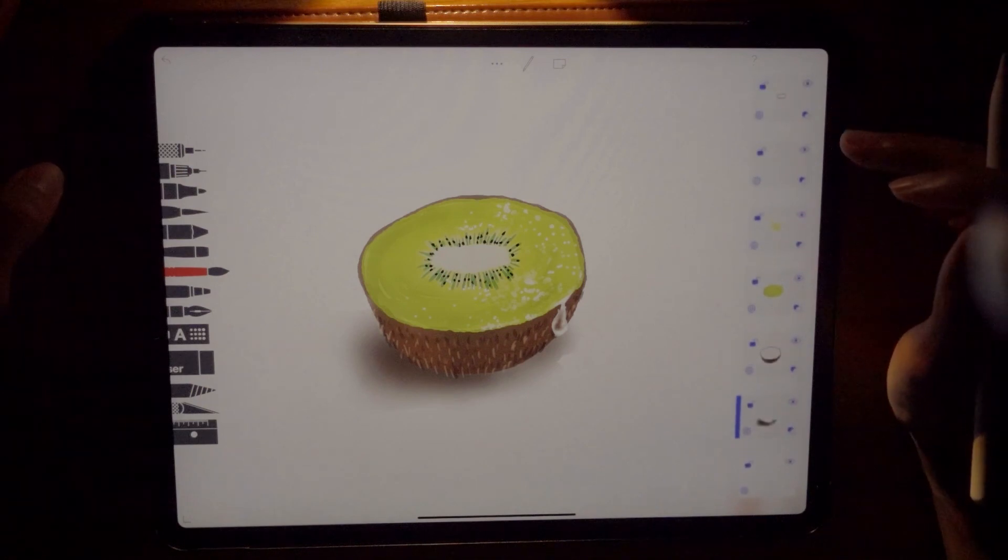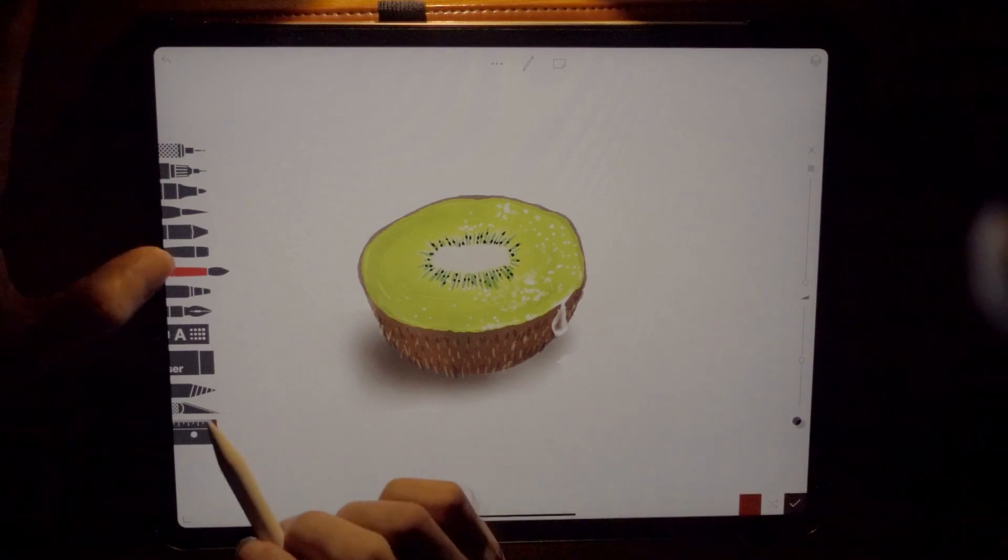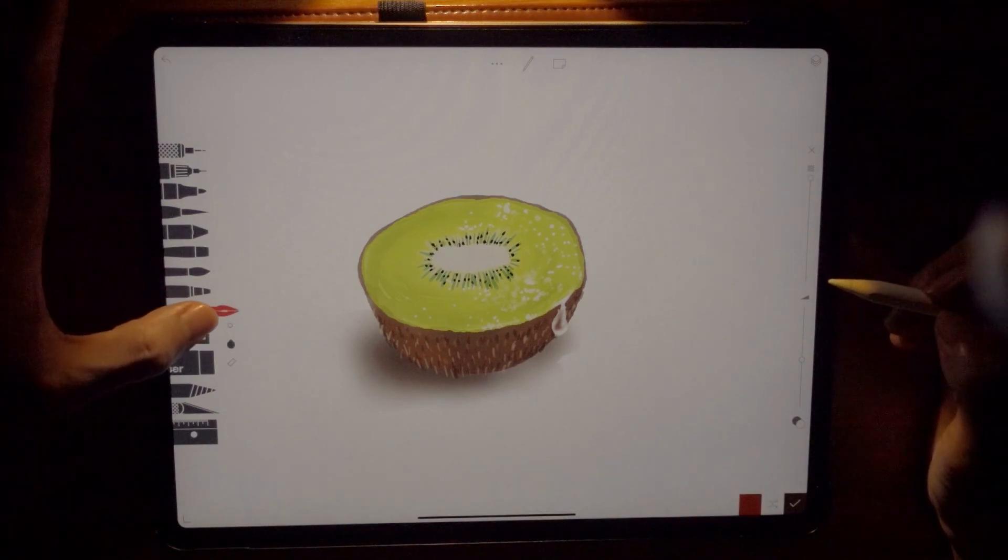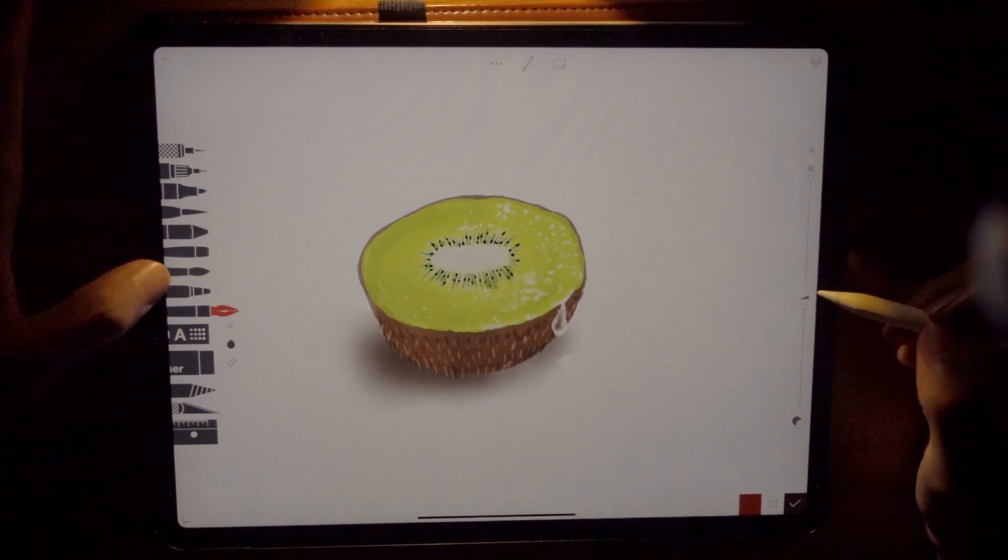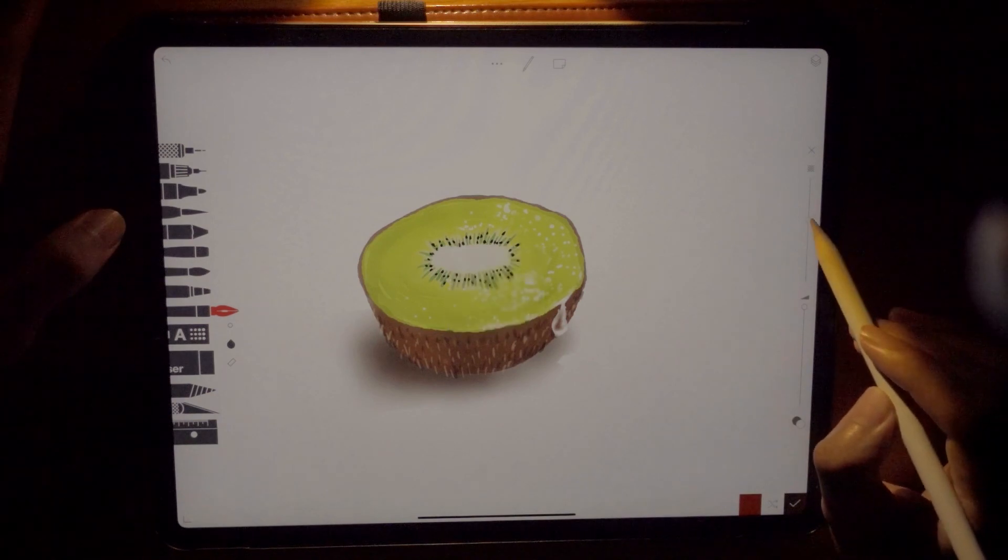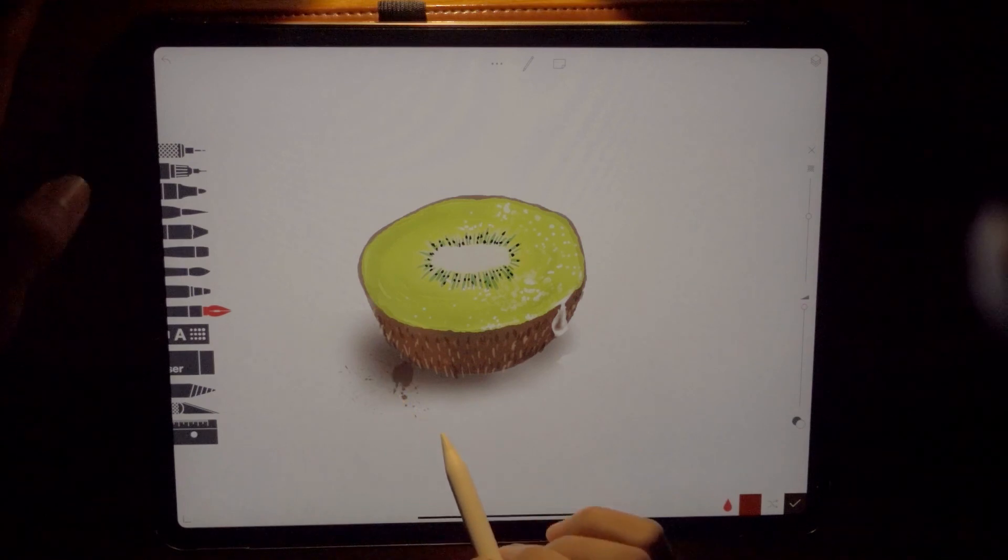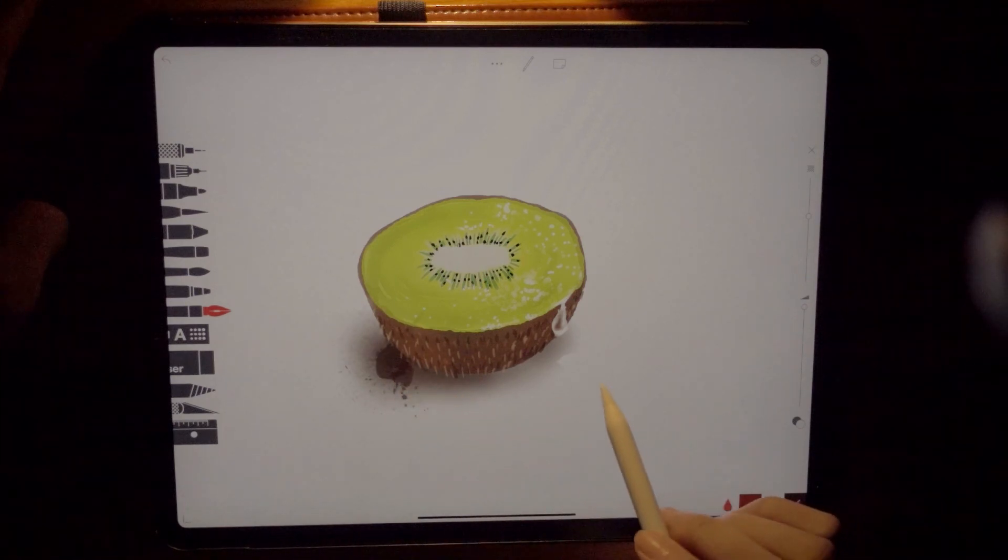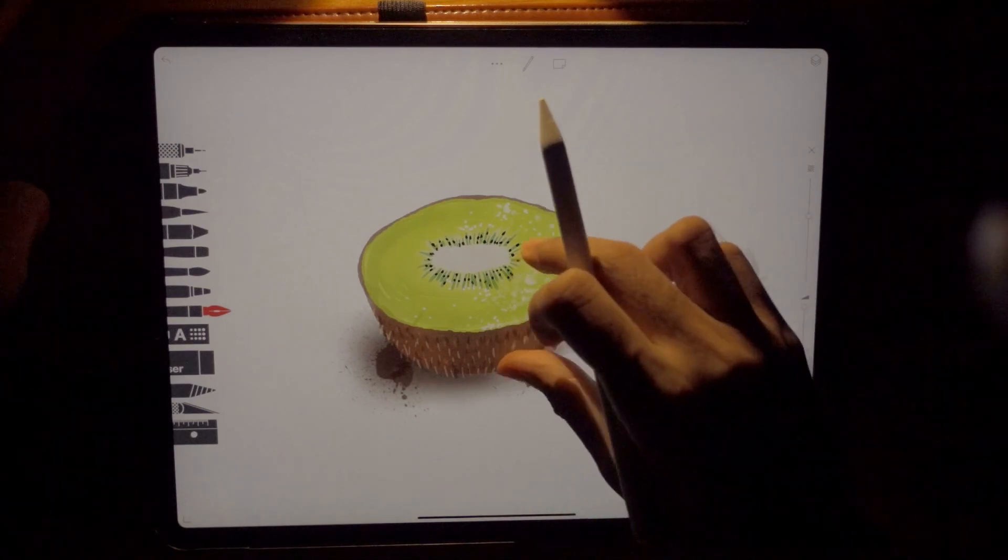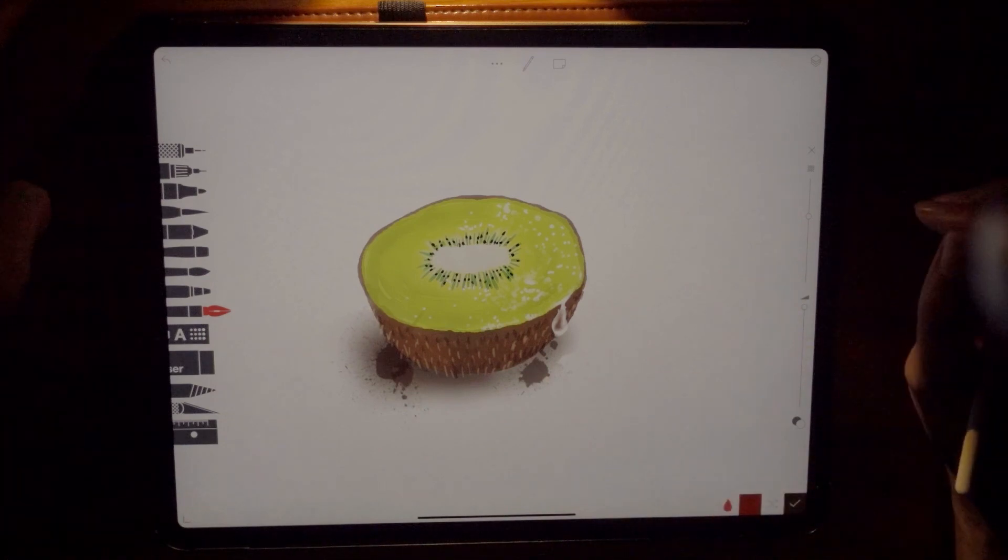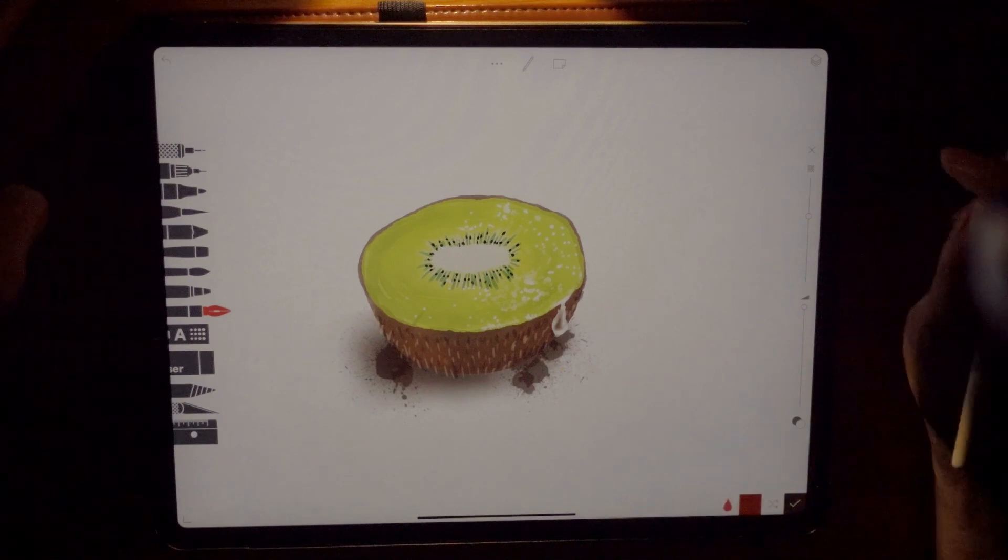And another fun thing that we can do. Maybe let's put it on the same layer as the shadow. Grab your Indian ink tool pen. Set the size to the biggest. And then set the opacity to about 65. And then just lightly touch. Lightly touch. Another one. Lightly touch. Gives it the splash effect. I like this. Lightly touch. That is done.